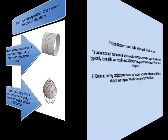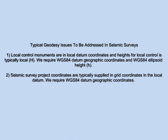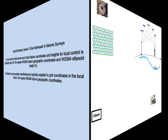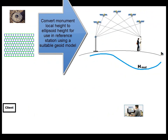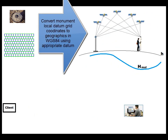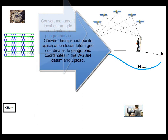Typical geodesy issues to be addressed in seismic surveys include the fact that local control monuments are in local datum coordinates and heights for local control is typically local or orthometric height. We require WGS84 datum coordinates and WGS84 ellipsoid height. So in looking at the big picture in seismic surveying, we want to convert monument local heights to ellipsoid heights for use in the reference station using a suitable geoid model. We want to convert monument local datum grid coordinates to geographic coordinates in the WGS84 datum using the appropriate datum shift. We want to convert the stakeout points, which are in local datum grid coordinates, to geographic coordinates in the WGS84 datum for upload.